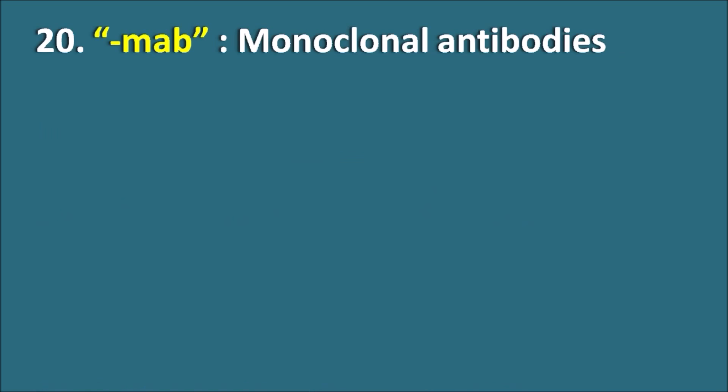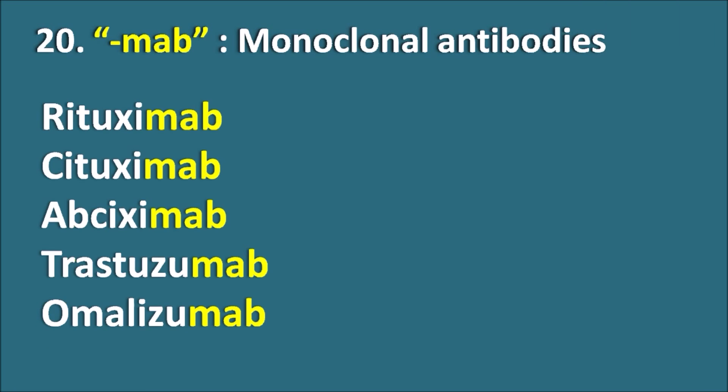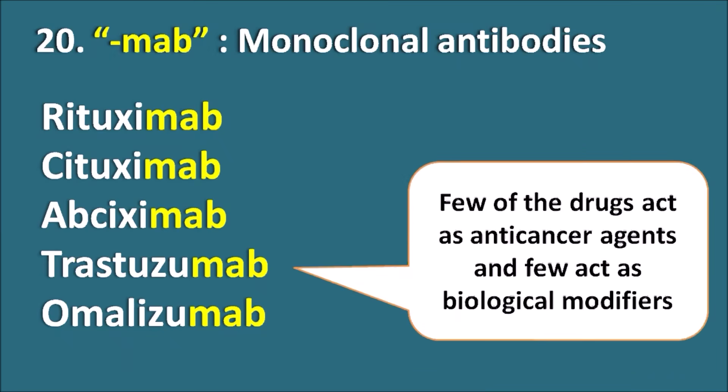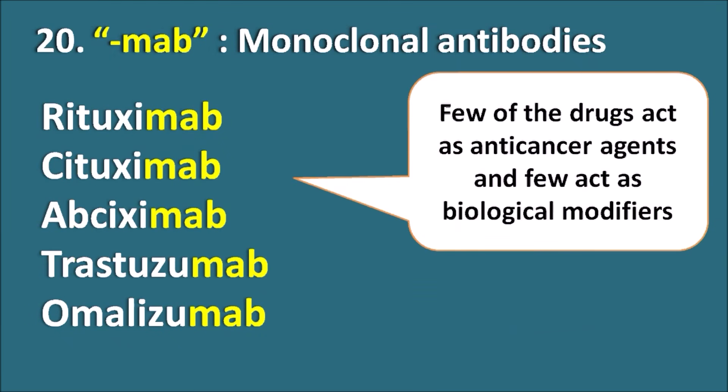Twentieth, the suffix '-mab' indicates monoclonal antibodies. Drugs like Rituximab, Cetuximab, Abciximab, Trastuzumab, and Omalizumab are all monoclonal antibodies ending with '-mab'. These drugs can be used as anticancer agents as well as biological modifiers to suppress immunity.